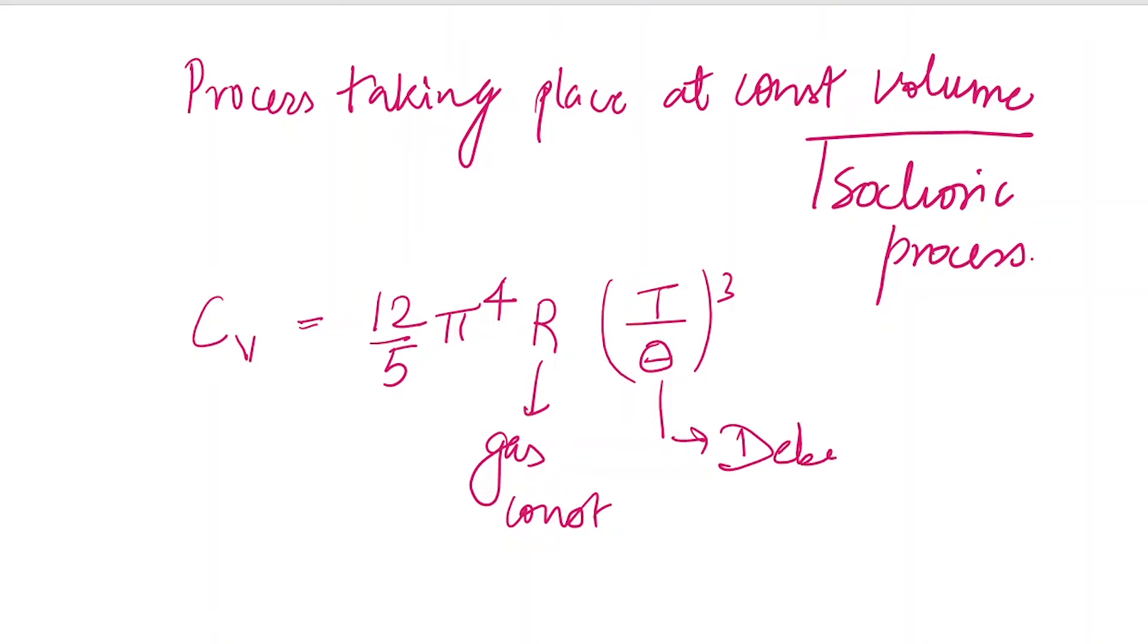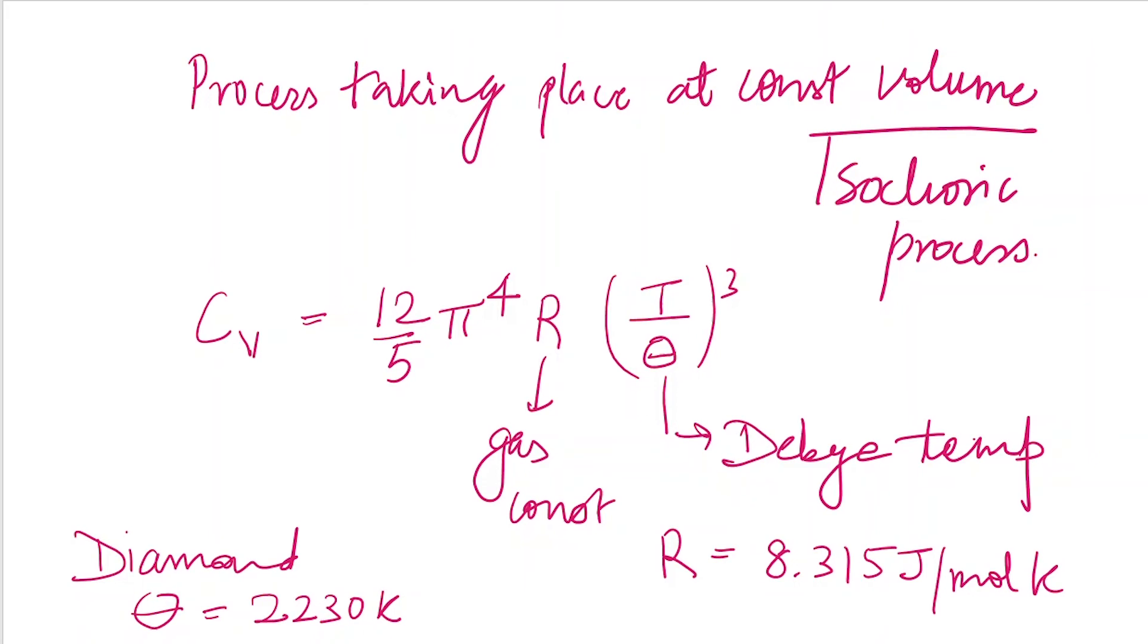This Θ is the Debye temperature. We are given that R = 8.315 joule per mole Kelvin, and for diamond, the Debye temperature is 2230 Kelvin.